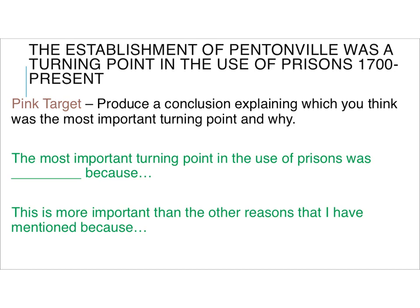And finally, the last target is the pink one on the essay. Due to formatting I seem to have got rather a brown there rather than pink, but just imagine it's a lovely bright pink colour. A conclusion — why you think it was the most important turning point and why. You'd start with something like: the most important turning point in the use of prisons was [whatever you've said], because. Then you put: this is more important than other reasons. It's this bottom bit that people forget to do — they say what's most important but forget to compare. If you've got pink, you've either not done a conclusion or not done both aspects. So get cracking and get that sorted. If you're unsure of anything, give me a shout.